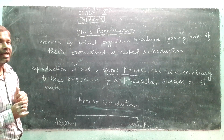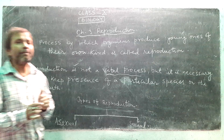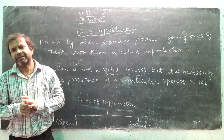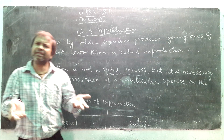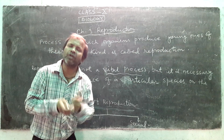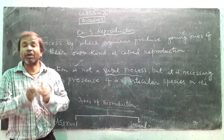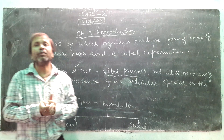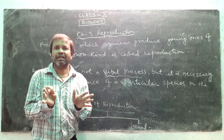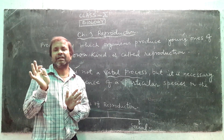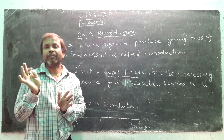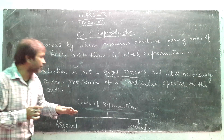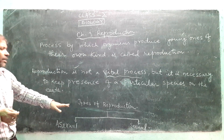Let me give an example. Take a mule — a mule cannot reproduce, but it still lives its whole life. This shows that reproduction is not necessary for an individual to stay alive. A mule lives its entire life without reproduction. So reproduction is not vital for survival of an individual. Now, what are the types of reproduction?